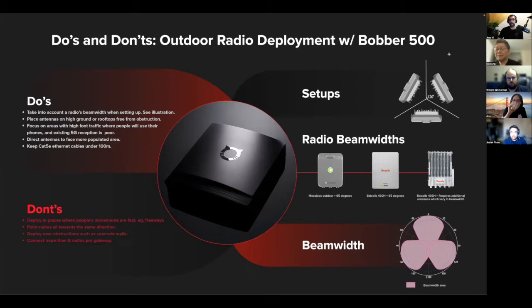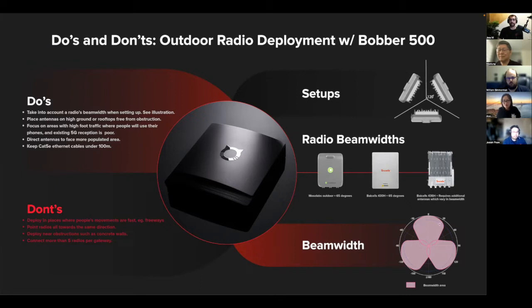For a three-radio setup covering almost 360 degrees, set the antennas 120 degrees apart. There will be a few dead spots but they'll cover most areas. Your setup will vary — some people will want to cover one direction more than others. Our recommendation is three radios, you can go up to four, but try not to connect more than five radios per gateway.